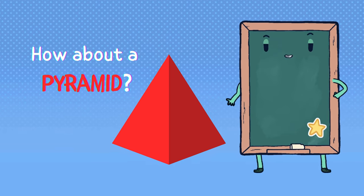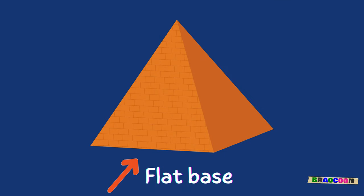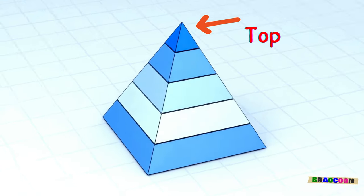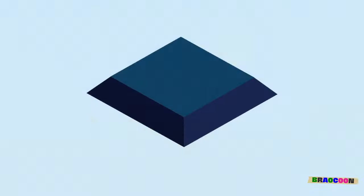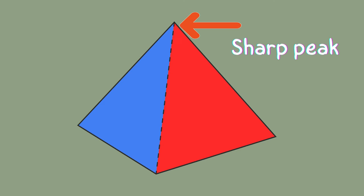How about a pyramid? A pyramid is a solid shape with a flat base and triangular faces that come to a point at the top, like the famous Egyptian pyramids. It stands firmly on its base and narrows as it rises, creating a sharp peak.